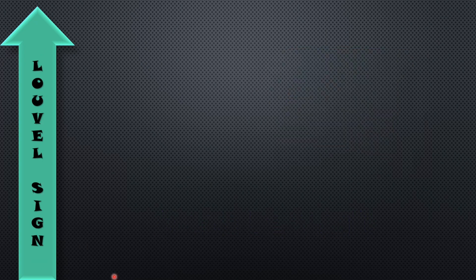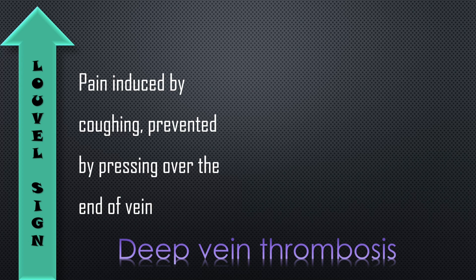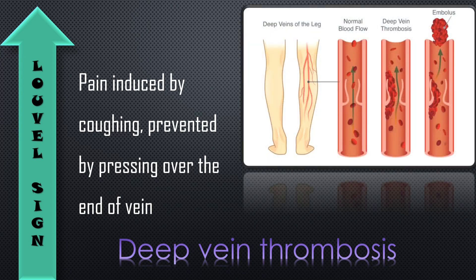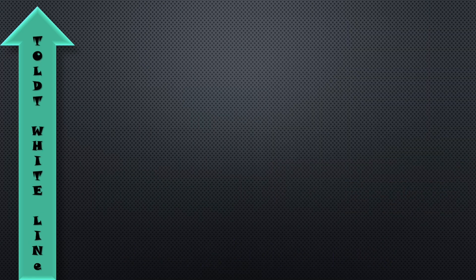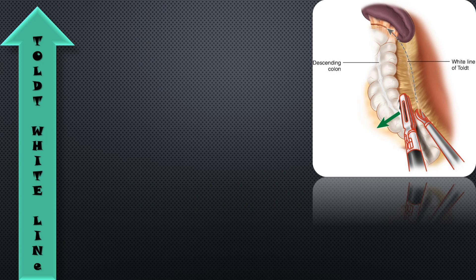The next one is the Lowell sign. Lowell sign is seen in deep vein thrombosis. In deep vein thrombosis, venous pain is induced by coughing and prevented by pressing over the end of the vein. That is a sign of deep vein thrombosis, known as the Lowell sign.